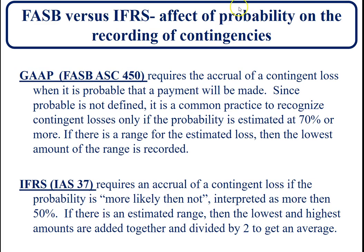Here are the rules. Under GAAP, FASB ASC 450, they require the accrual of a contingent loss when it is probable that a payment will be made. Since 'probable' is not defined, it is common practice to recognize contingent losses only if the probability is estimated at 70 percent or more. If there is a range for the estimated loss, then the lowest amount of the range is recorded. These are the requirements under GAAP.